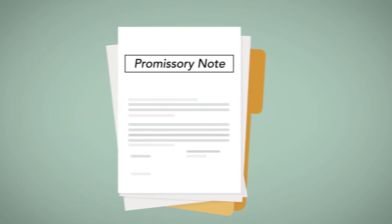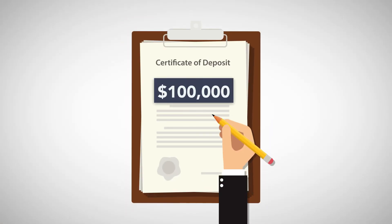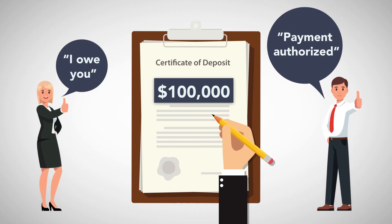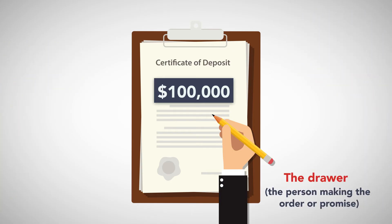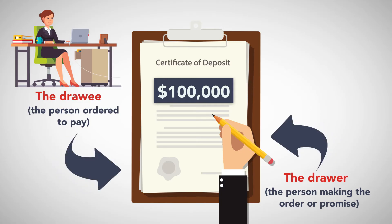A negotiable instrument must assert an unambiguous promise or order to pay. A mere IOU or authorization for someone to pay money is not a negotiable instrument. Also, the drawer — the person making the order or promise — and the drawee — the person ordered to pay — must be clearly identified on the instrument.